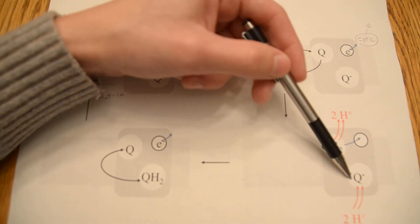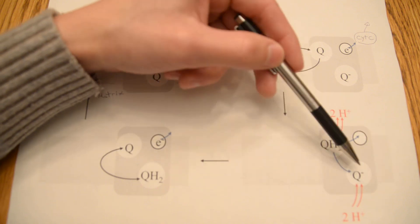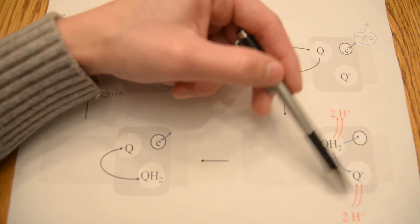and one more electron to the partially reduced ubiquinone down in this site. This ubiquinone now that has two electrons, one before and one from here, will accept two more protons, and then now it is fully reduced.